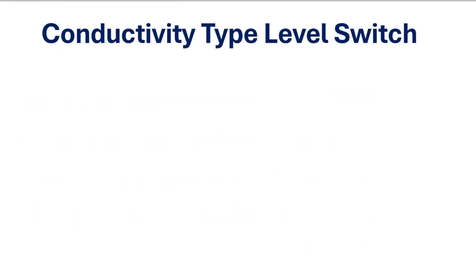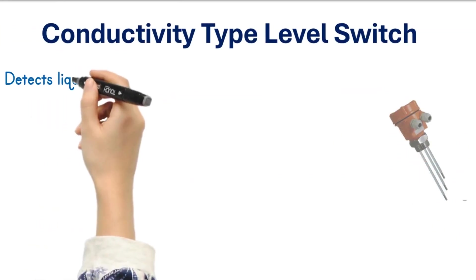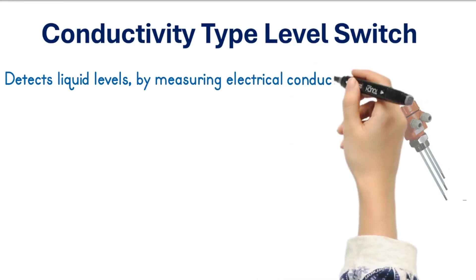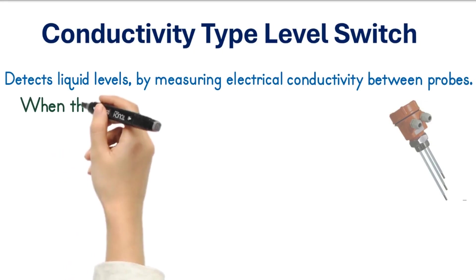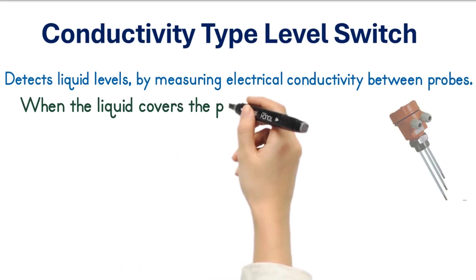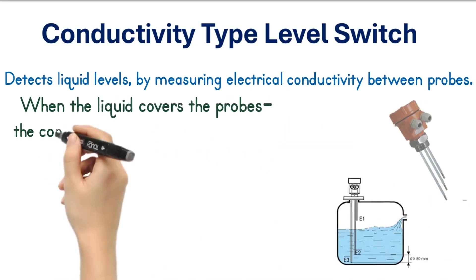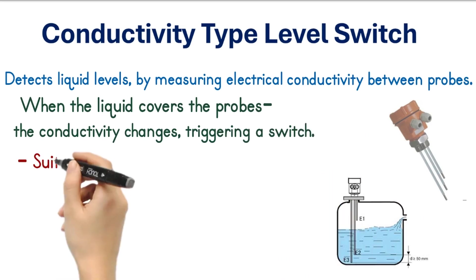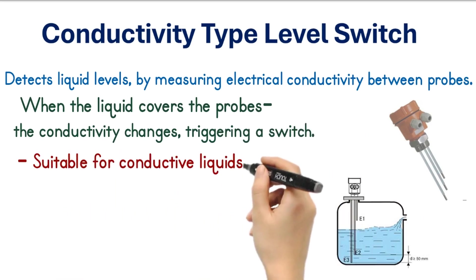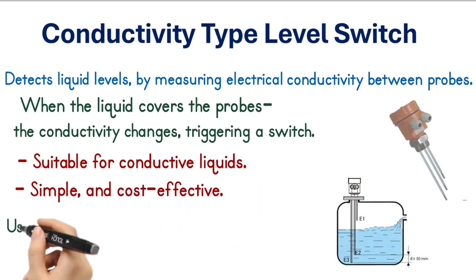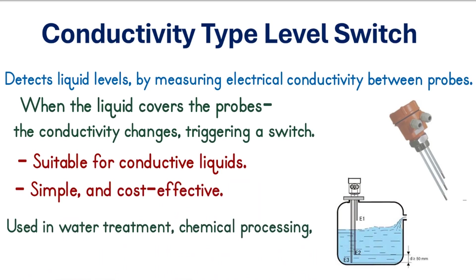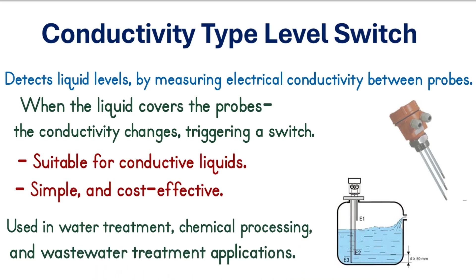Conductivity type level switch. The conductivity type level switch detects liquid levels by measuring electrical conductivity between probes or electrodes. When the liquid covers the probes, the conductivity changes, triggering a switch. They're suitable for conductive liquids, simple, and cost-effective. Commonly used in water treatment, chemical processing, and wastewater treatment applications.